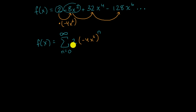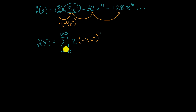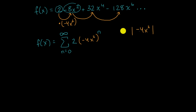Let's think about under what conditions the absolute value of our common ratio is less than one. That helps us find a radius of convergence. If x is in that interval, we can find a non-infinite way of expressing this function — specifically, when will this series converge to a finite value?